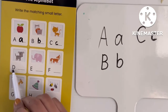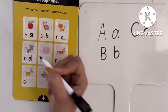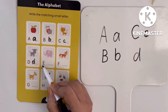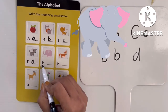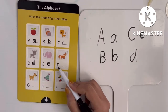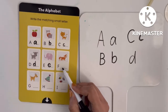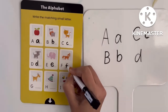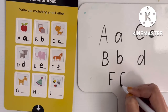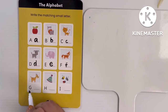Next, D — D for dog. The small letter will be: d. Next, E — E for elephant. This is uppercase; lowercase will be: e. Next, F — F for fox. This is uppercase F. In lowercase we write: f. So this one is uppercase F and lowercase will be like this: f for fox.